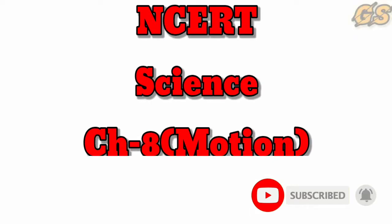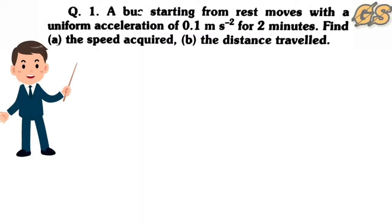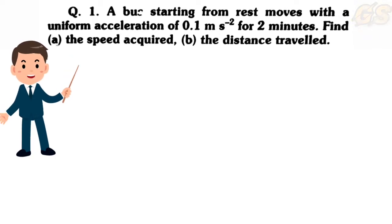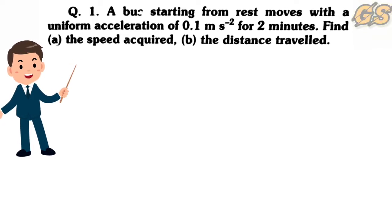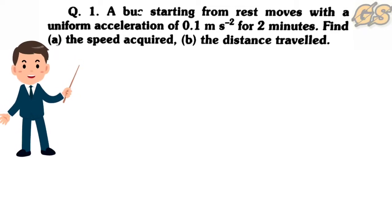Today we will solve numericals from NCERT Science book, page number 109, five questions. Let's start with Question 1: A bus starting from rest moves with a uniform acceleration of 0.1 m/s² for two minutes. Find: (a) the speed acquired, and (b) the distance traveled.